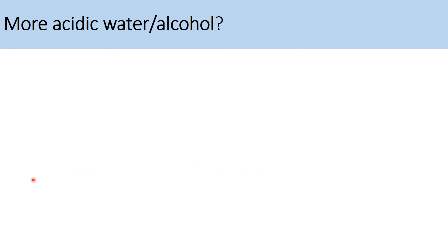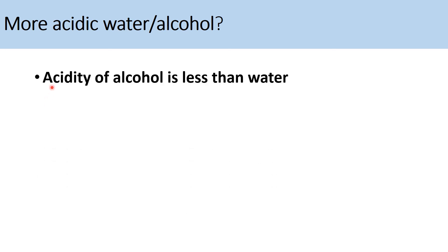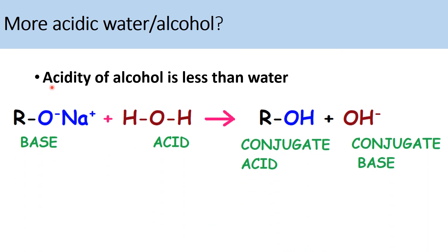Water versus alcohol: which is more acidic? The acidity of alcohol is less than water. The reaction between an alkoxide ion and water shows that water is a better proton donor than alcohol — water donates H plus, forming alcohol as the conjugate acid, and OH minus as the conjugate base, which combines with the sodium ion to form sodium hydroxide. Therefore, water is more acidic than alcohol because it donates H plus more easily.